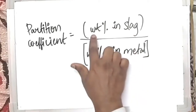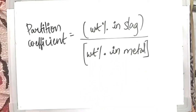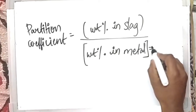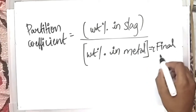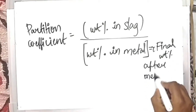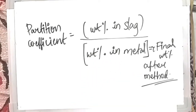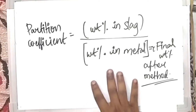the desulfurization ratio will be the weight percentage of sulfur present in the slag to the final weight percentage of sulfur present in the metal — that means after desulfurization, what is the amount of sulfur left in the metal. Always remember, the denominator is the final weight percentage after completion of the process. This is the basis for most numericals you'll see in steel making.